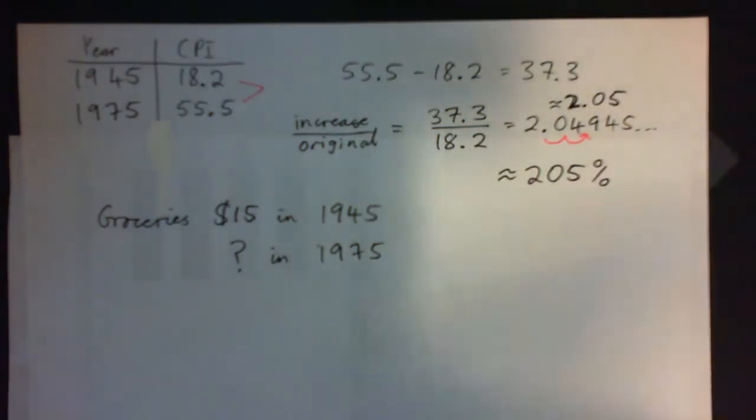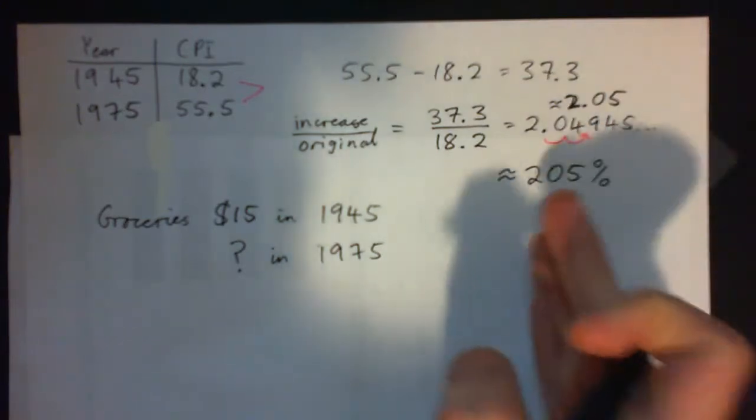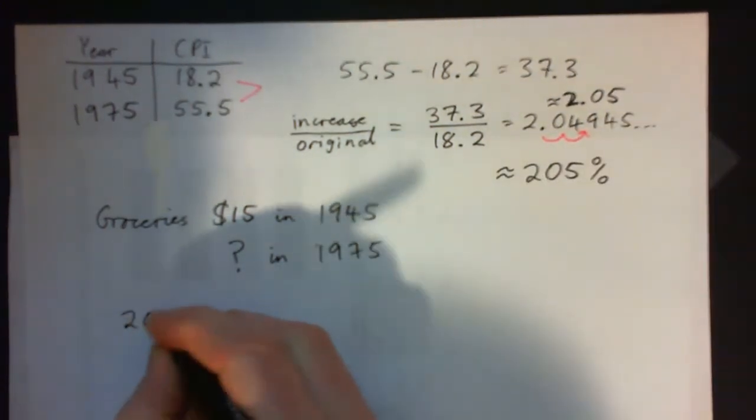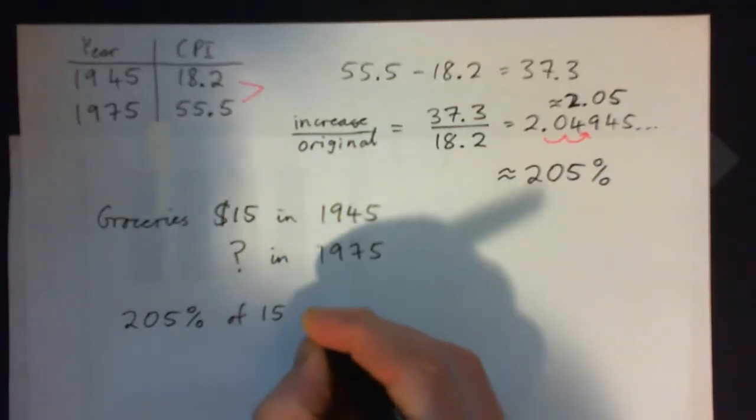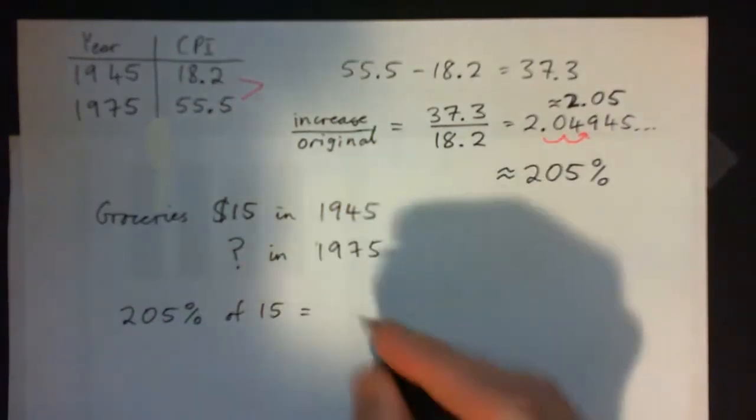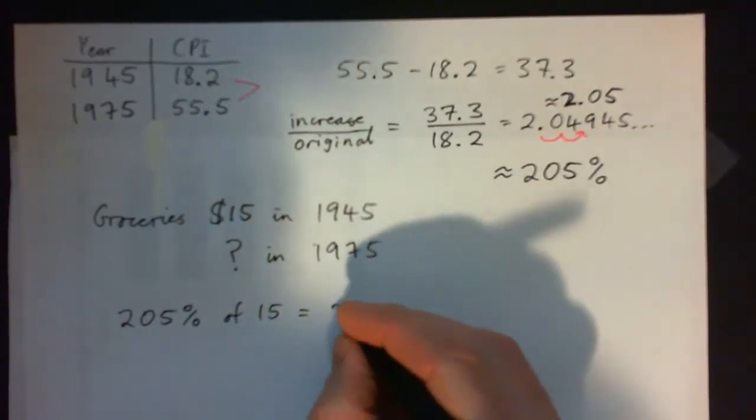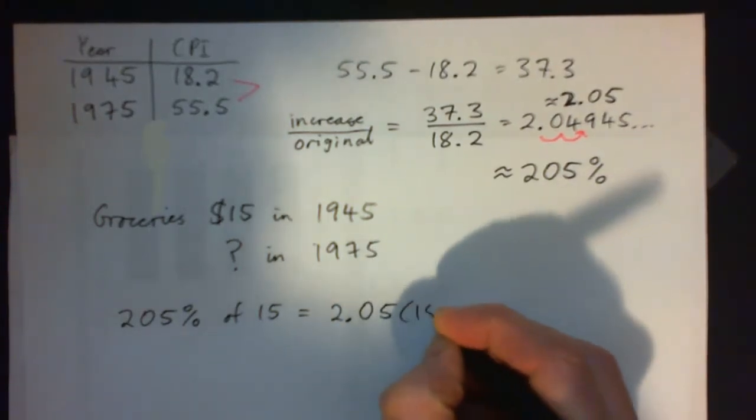The mistake you're making is probably you just didn't add on the 15. You probably figured out you'll need to get 205 percent of 15 first. So that is in fact 2.05 times 15.